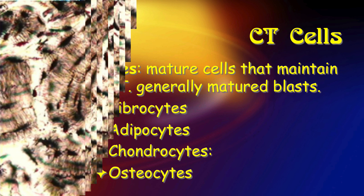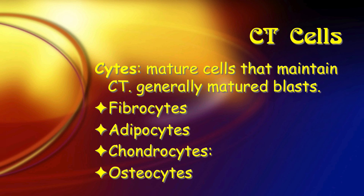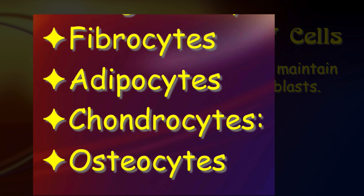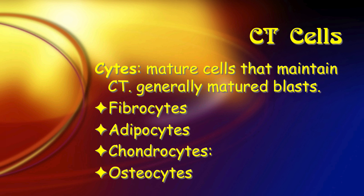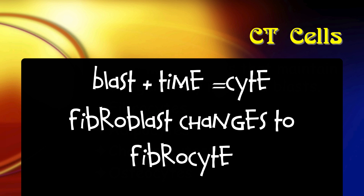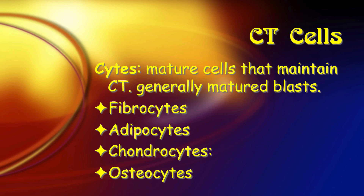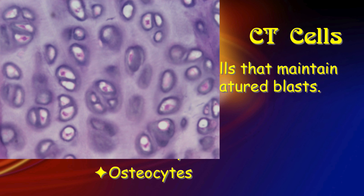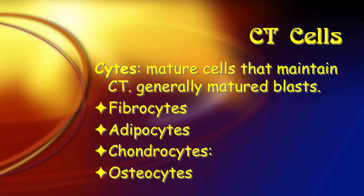Once a tissue has been built, we need somebody to maintain it. Now we need cells that are going to mow the lawn, paint the picket fence — just keep up the neighborhood basically. These are the -cytes: fibrocytes, adipocytes, chondrocytes, osteocytes. They're going to maintain bone tissue or cartilage tissue, store fat, and maintain things like tendons or the dermis of the skin. These usually started out as blast cells. Think of chondrocytes or osteocytes — they build tissue, and this tissue is hard, and they kind of get locked into those lacunae. Now they can't get out, so they become more the mowers than the builders.